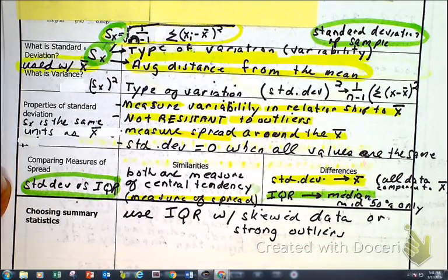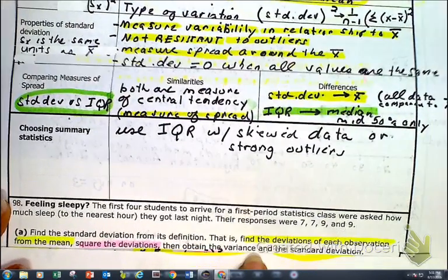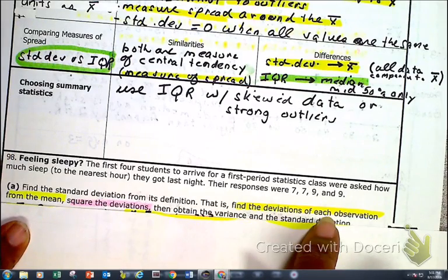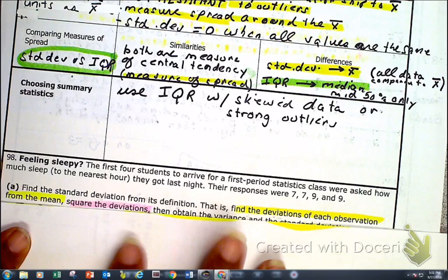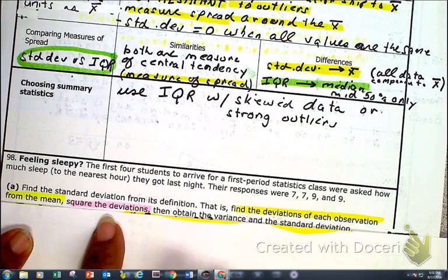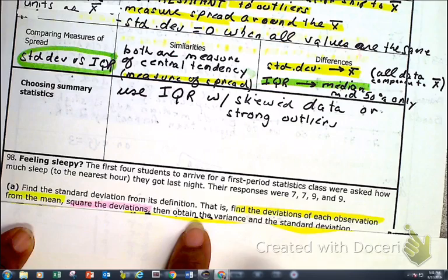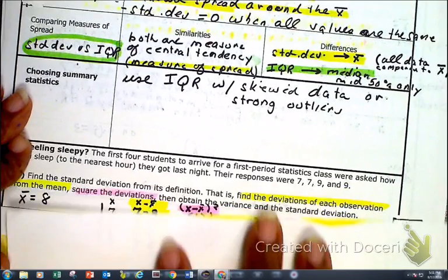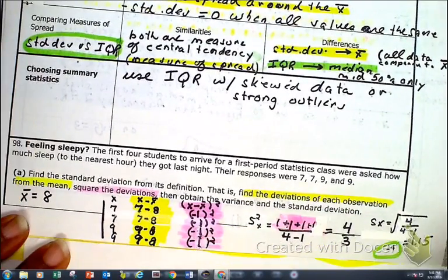Now I want you to read number 98. We need to find the deviation of each observation from the mean — we're trying to see how far each value is from the mean. We want to find the square of the deviation and then find the variance and standard deviation, given the values 7, 7, 9, and 9. So I made a little chart — you might want to make a chart too.